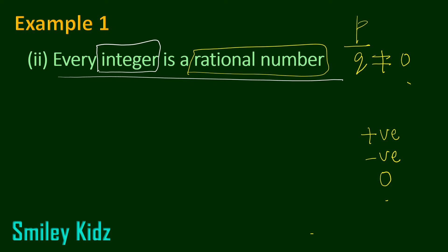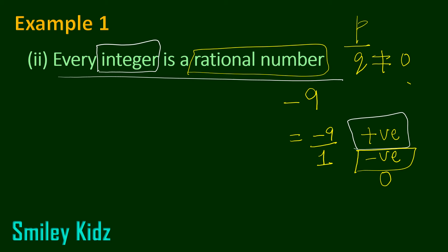Then, what about negative numbers? We have seen that positive numbers verify this. Let's say we have minus 9. Can this be expressed in the form of P by Q? Yes — minus 9 can be written as minus 9 by 1 in P by Q form, and yes, it is a rational number. So any negative integer also satisfies this — it can be written in the form of P by Q and becomes a rational number. Negative numbers also verify that.